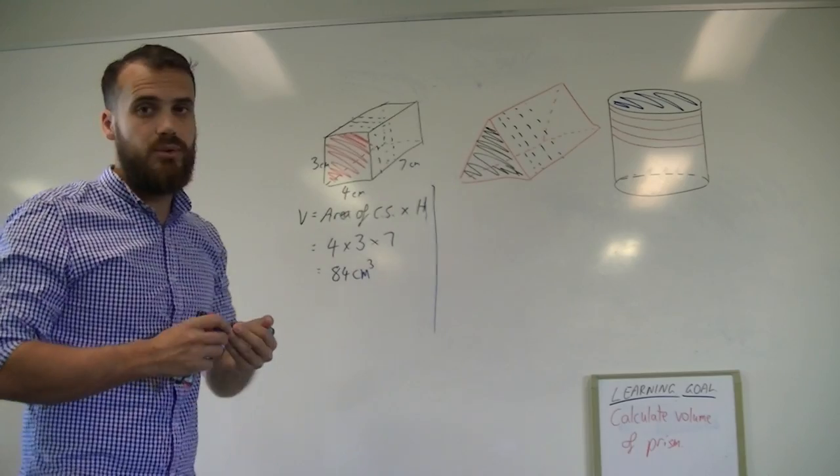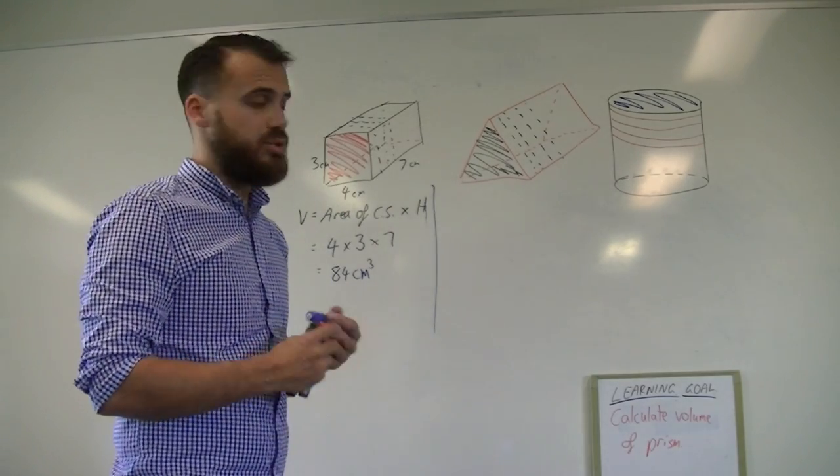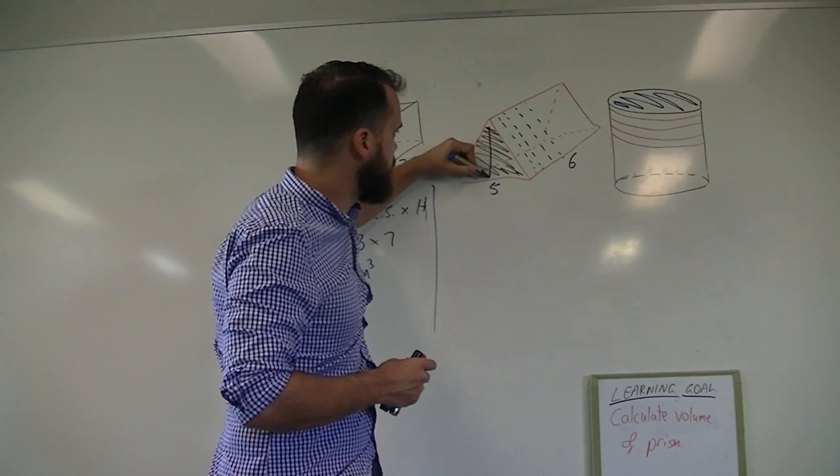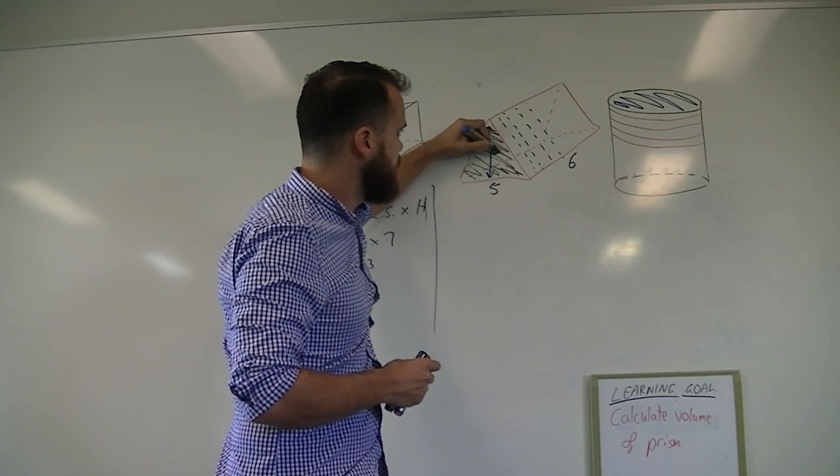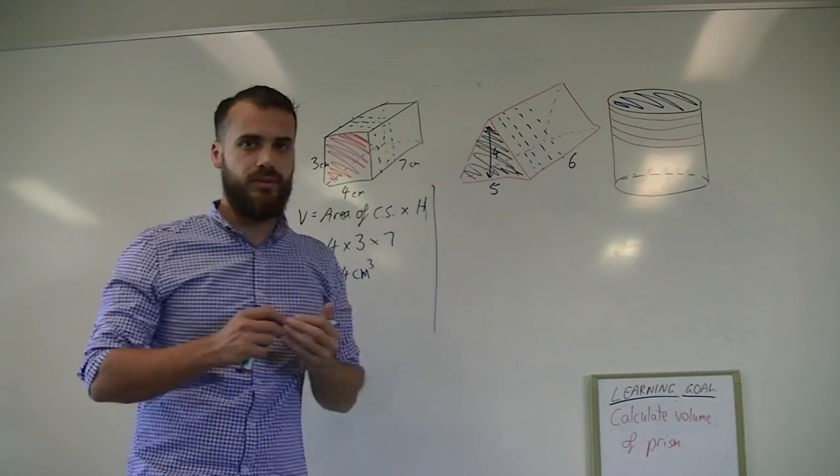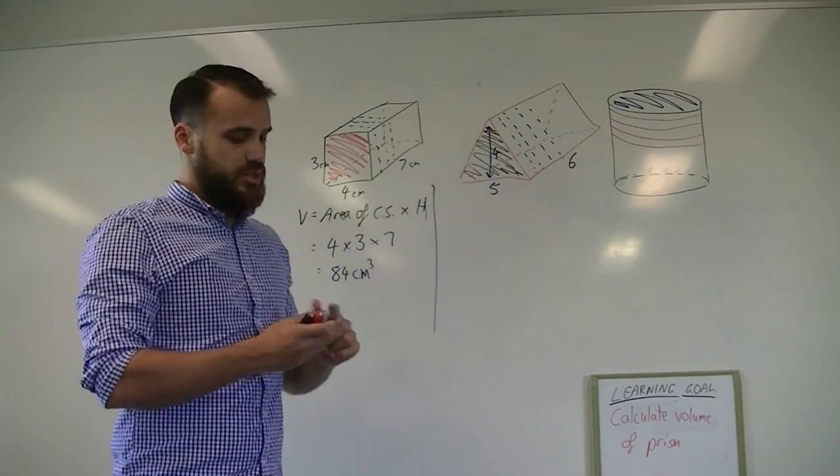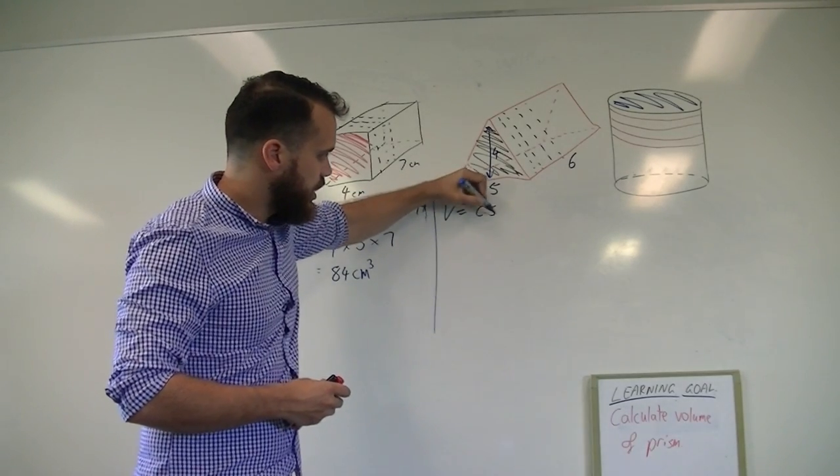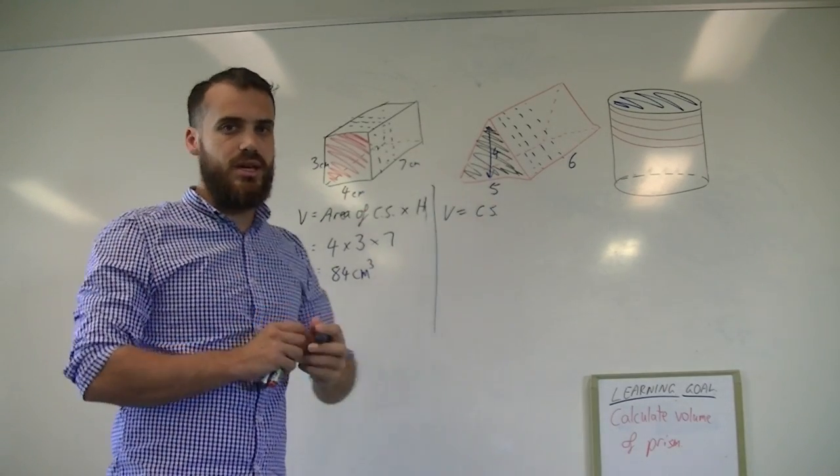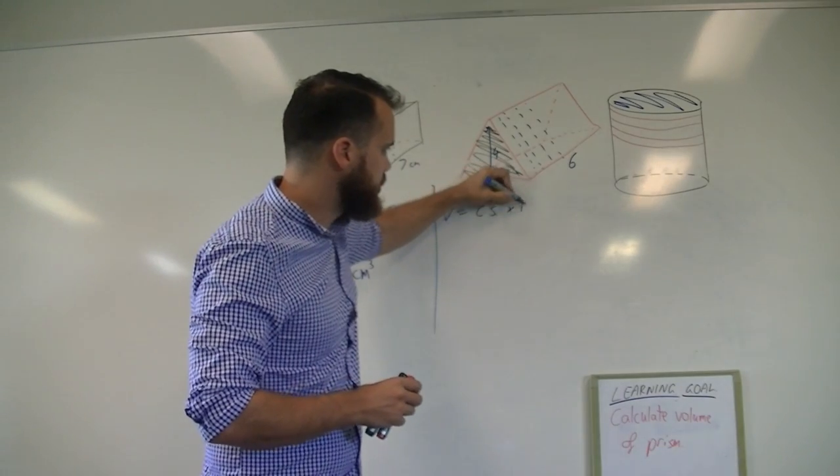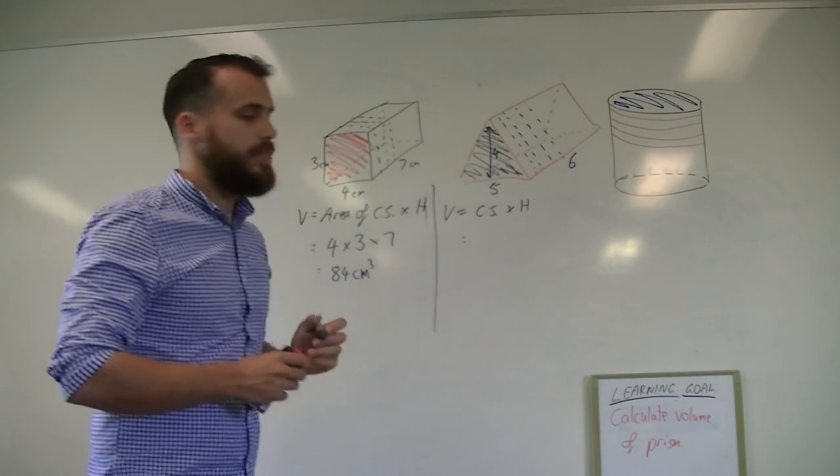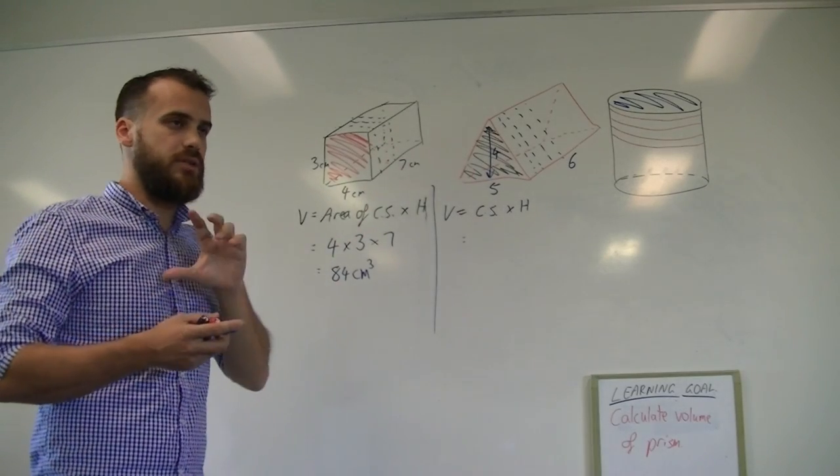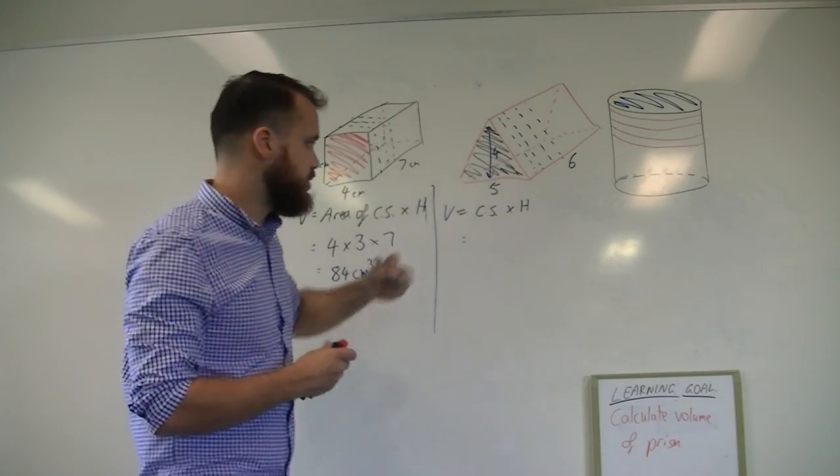We can do the same here with our triangle. I just need to put some units in again. We'll call that five, we'll call that six, and it needs a height. Give it a height of four. So the same formula applies. Volume equals area of cross section, I'll just call it CS for short, times height. This time the cross section is a triangle, and you know the area of a triangle is base times height divided by two.